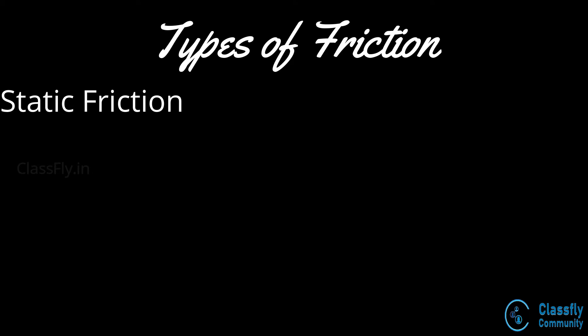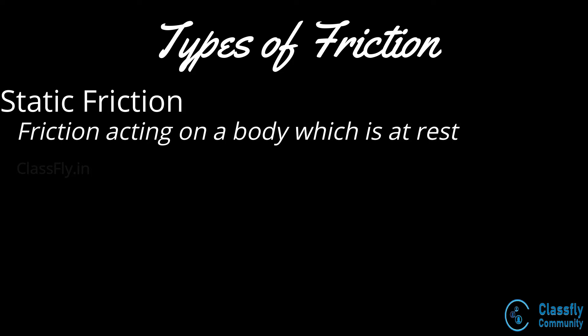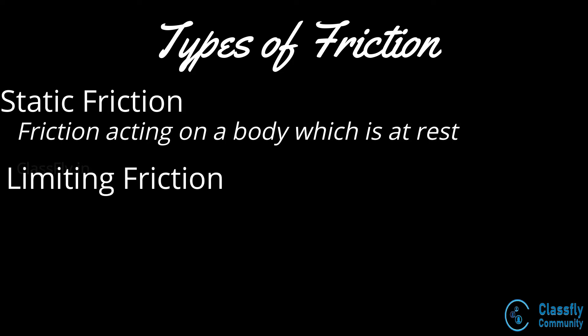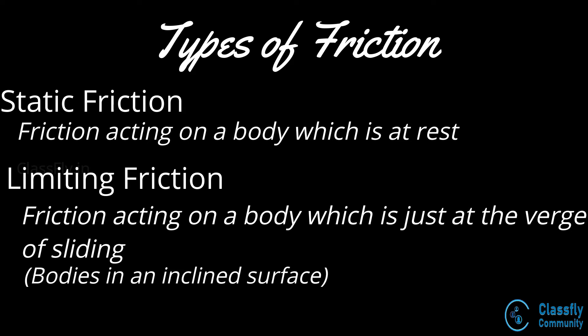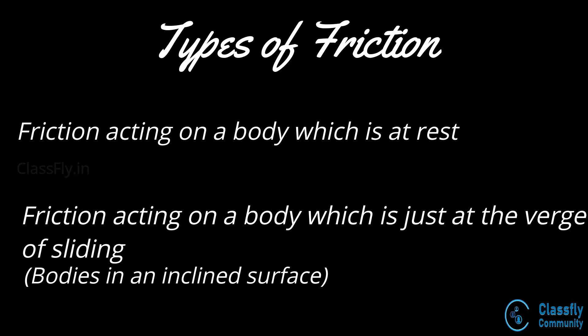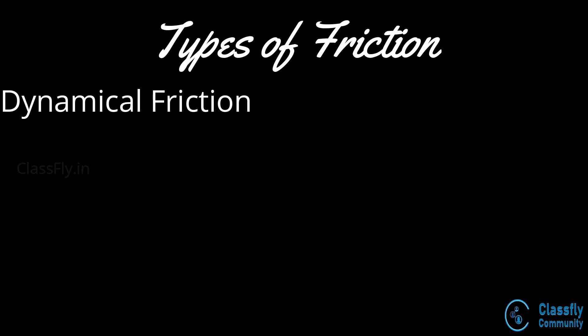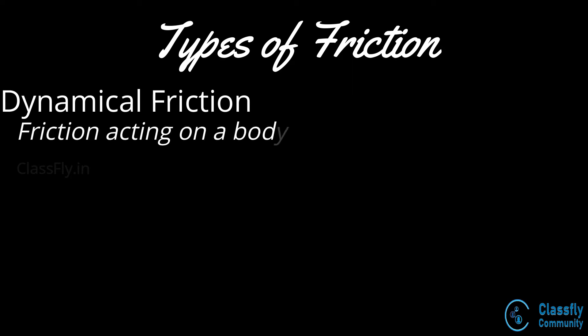Static friction: the friction which acts on a body which is at rest is called static friction. Limiting friction: the friction acting on a body which is just on the point of sliding is known as limiting friction — that is, the friction acting on a body which is about to slide or start motion from a point. Dynamical friction: this is the friction which acts on a body which is already in motion.